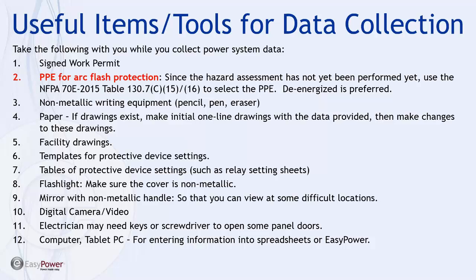Bring writing equipment including pencil, erasers, pens, paper, an initial one-line drawing, notes, facility drawings, and templates — specifically if you have adjustable protective devices where there can be multiple settings that have to be recorded. Even if you think nothing has changed in the plant, you want to validate that the data is correct and that the settings haven't been changed on any adjustable devices or fuses. Frequently, that can be a change that isn't documented, and that's the purpose of doing the data collection phase of the arc flash assessment.